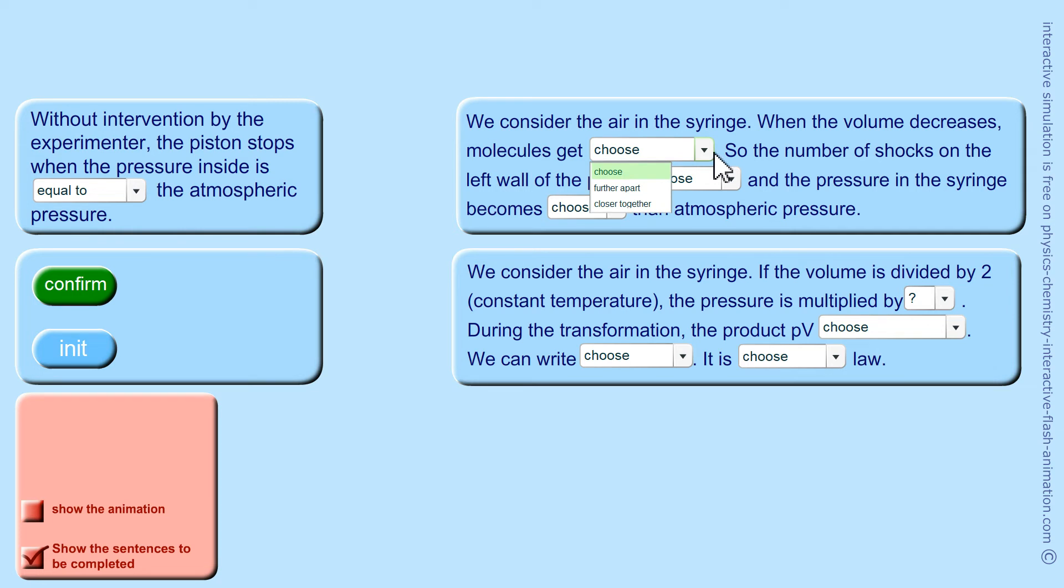We consider the air in the syringe. When the volume decreases, the molecules get closer together. So the number of shocks on the left wall of the piston increases.